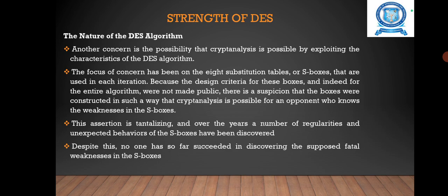Next, we are going to see the nature of the DES algorithm. Another concern is the possibility that cryptanalysis is possible by exploiting the characteristics of the DES algorithm. The focus of concern has been on the eight substitution tables, or S-boxes, used in each iteration. Because the design criteria for these S-boxes — and indeed for the entire algorithm — were not made public, there is a suspicion that the boxes were constructed in such a way that cryptanalysis is possible for an opponent who knows the weakness in the S-boxes.